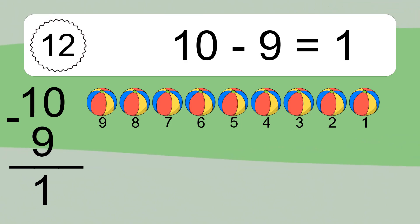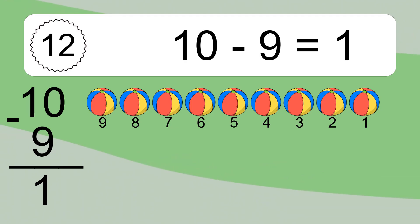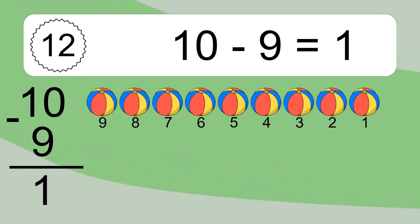10 minus 9 equals 1. Let's count it: 9, 8, 7, 6, 5, 4, 3, 2, 1.